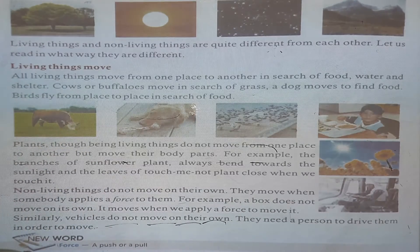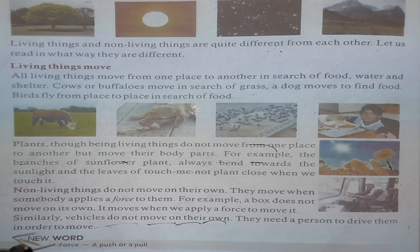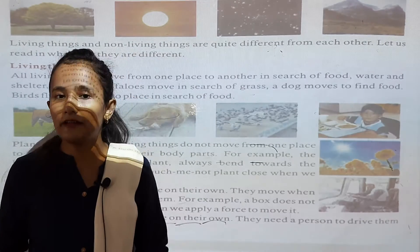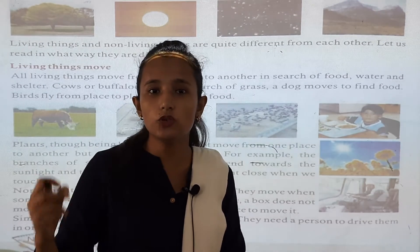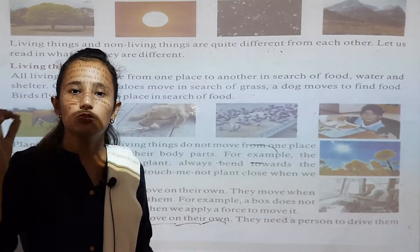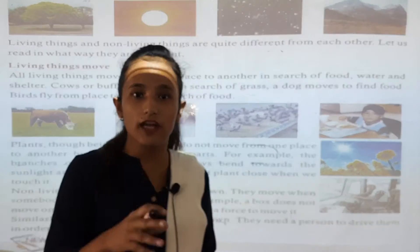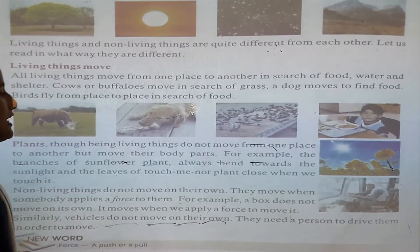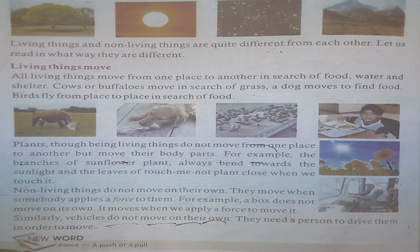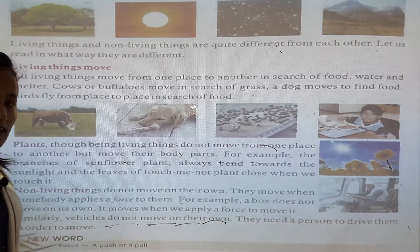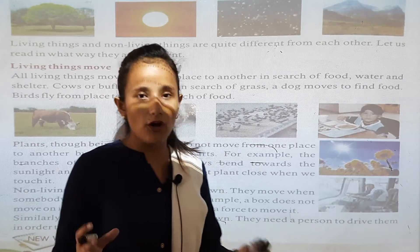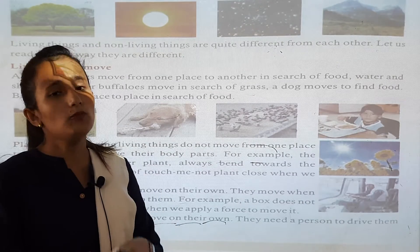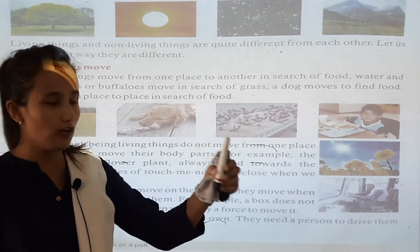Somebody has to apply a force to move non-living things. For example, a computer is a man-made thing — we have to use our hands and our brain to use a computer. A box does not move on its own — for example, this pen: it can move only with the help of us.